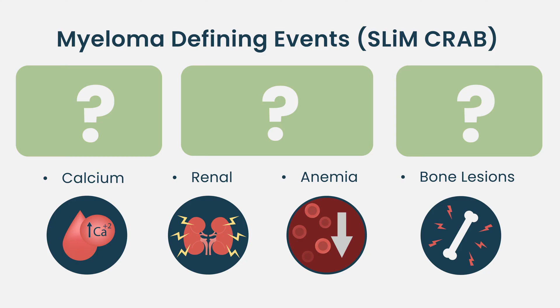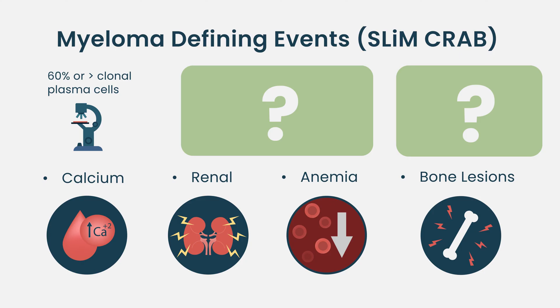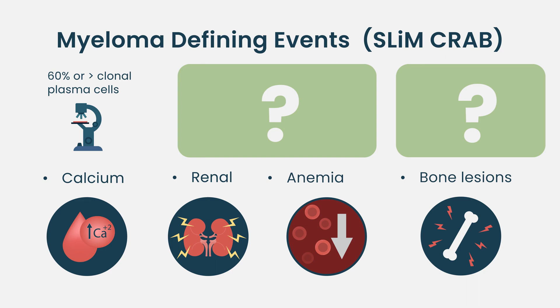In addition to the four CRAB features, the first of three additional myeloma-defining events is 60% clonal plasma cells in the bone marrow. On a bone marrow biopsy, if 60% or more of the cells are plasma cells — the malignant cells in multiple myeloma — and we confirm they are clonal by immunohistochemistry or flow cytometry showing expression of only one type of light chain, that qualifies as a myeloma-defining event.